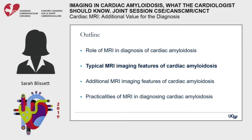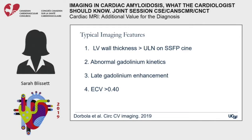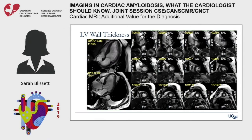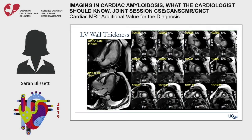The four typical MRI imaging features of cardiac amyloid proposed are: elevated LV wall thickness, abnormal gadolinium kinetics, late gadolinium enhancement, and an expanded ECV greater than 0.4. The last three require gadolinium administration. Cine SSFP sequences allow measurement of LV wall thickness at end-diastole, LV mass, RV hypertrophy, RV size and function, LV volumes and function, atrial dimensions, thickening of the interatrial septum or valves, and pericardial or pleural effusions. These images are comprised of data from multiple cardiac cycles, which can be degraded by poor breath-holds or atrial fibrillation with varying RR intervals.